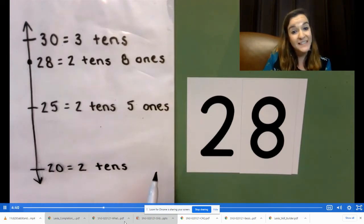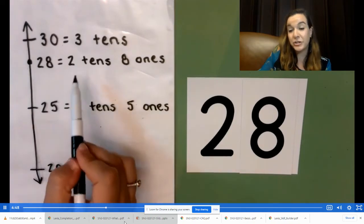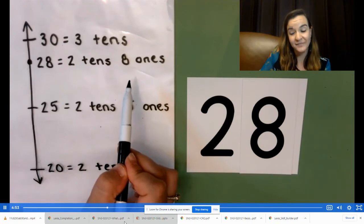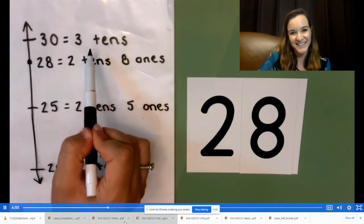Tell me that statement in unit form. Two tens, eight ones, rounded to the nearest 10, is 3 tens. Let's try another example. Go ahead and erase your board, but leave your number line and your tick marks.